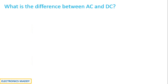Have you been wondering what is the fundamental difference between alternating current and direct current? Let us try to understand what direct current and alternating current are, and you will get to know the actual difference with respect to the mobility of electrons between AC and DC.